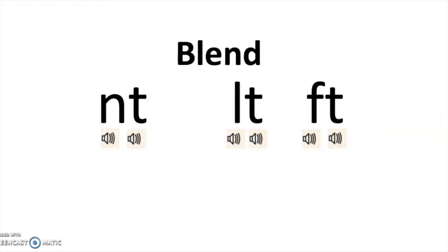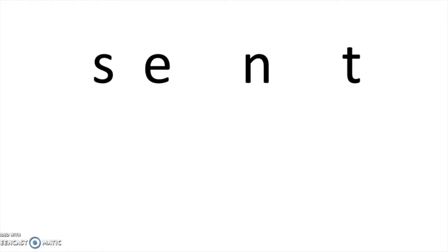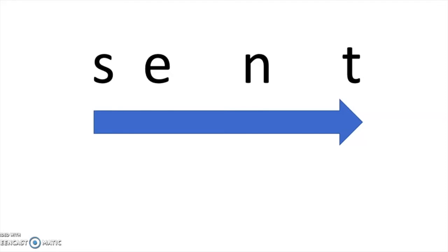A blend can also be at the end of a word, just like N-T, L-T, or F-T. Here's two examples. This word is S-E-N-T — four letters that each make their own sound, so it's four letters and four sounds. I know this is a closed syllable because it has one vowel E closed in by N and T. When I tap out and sound out this word and blend it together: S-E-N-T — Scent. The N and the T blend together, each making their own sound. N-T. Scent.